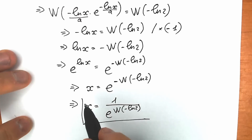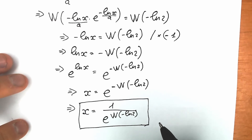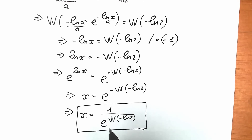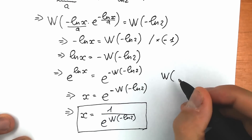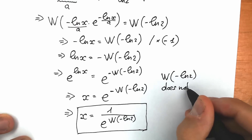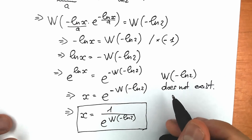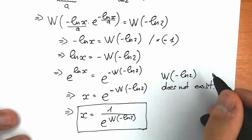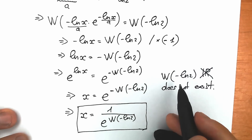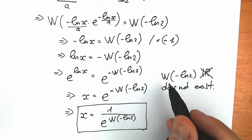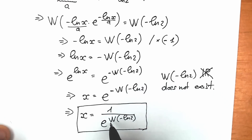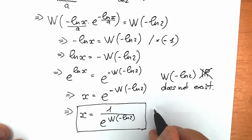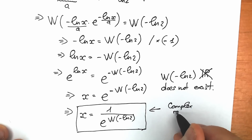This looks like our answer, but I was wondering what the approximate answer is. I was plugging this expression into internet tools, finding Lambert W of (negative ln 2), and wondering about this value — is this a real number or a positive number? When I checked, I found that Lambert W of (negative ln 2) does not exist as a real number. So in terms of real numbers, this Lambert W of (negative ln 2) does not exist, meaning this is not a real number value — we're talking about a complex value. So Lambert W of (negative ln 2) is a complex value, meaning x is a complex solution — a complex root.